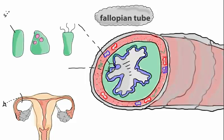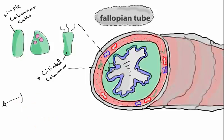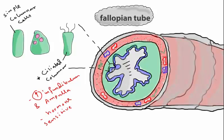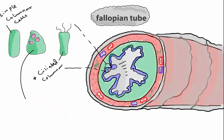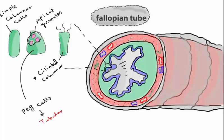The three cell types in the lamina propria are: simple columnar epithelium, ciliated columnar cells embedded within the simple columnar epithelium — which are abundant in the infundibulum and ampulla and are hormone-sensitive, with high estrogen levels increasing cilia production — and peg cells, which contain apical granules that secrete tubular fluid into the lumen.